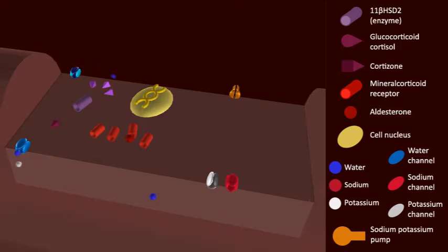In the collecting duct, the enzyme is co-expressed with the mineralocorticoid receptor. The enzyme converts the glucocorticoid cortisol, shown in purple, to cortisone, shown in purple. Cortisol has activity at the mineralocorticoid receptor, cortisone does not.